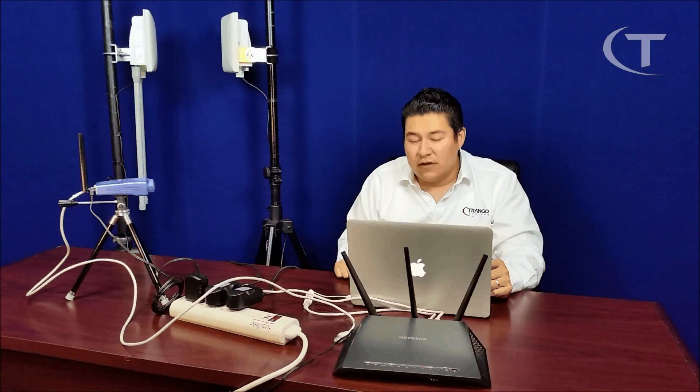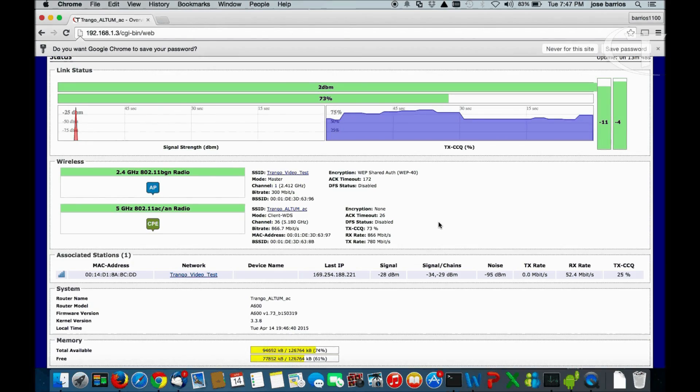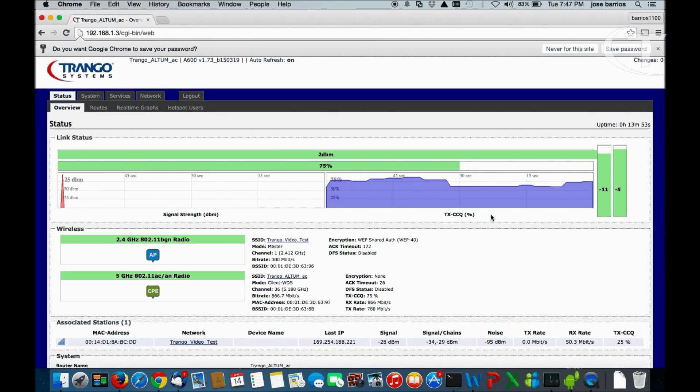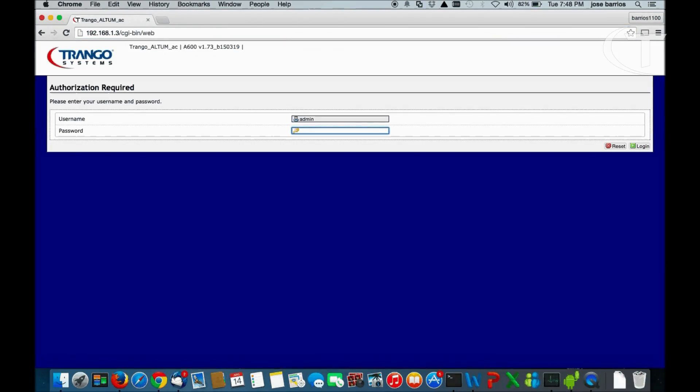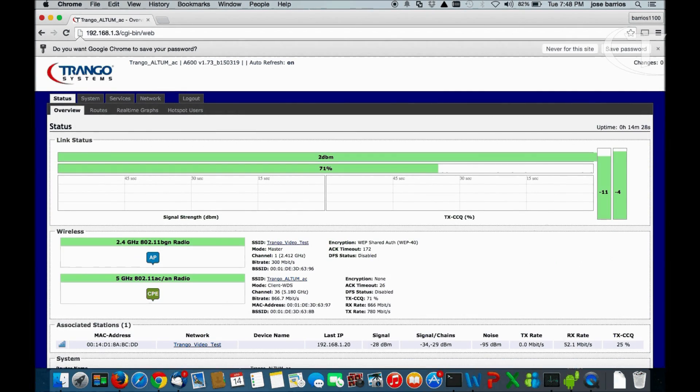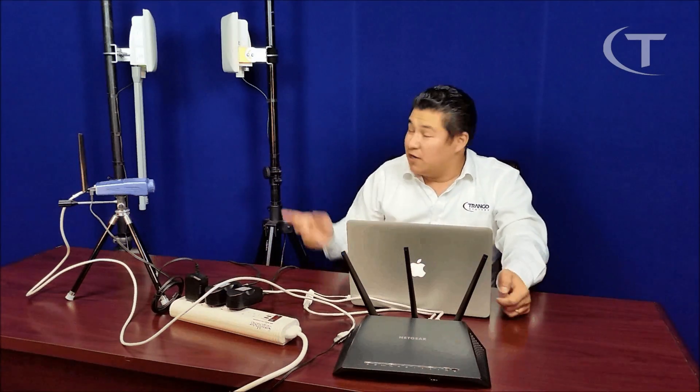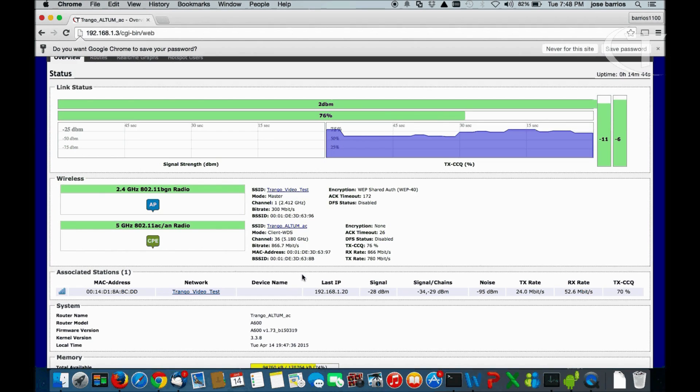In our station site, on our AP site, we can actually now see that the camera is associated to the wireless access point. We can see here one association, that's going to be our camera connected. So now that we disconnected the camera from our router, it's going to associate via the wireless access point with our station site. Let's take a look at our station. So now our camera is associated wirelessly. How do we know that? In our station site, when we log into it, on the wireless settings, there's a section called Associated Stations. That's the number of users on the wireless access point. At this point in time, it's only the camera.